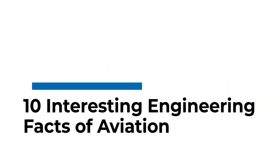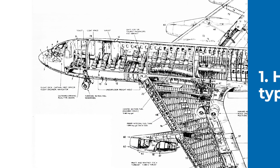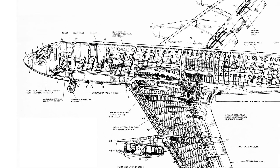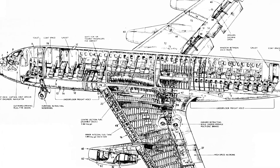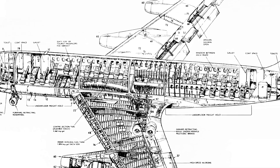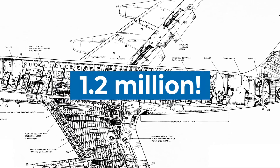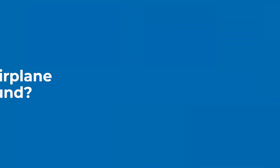In observance of National Aviation Day, we're going to take a look at 10 interesting engineering facts of aviation. So here we go. How many parts are in a typical commercial airplane? A typical single-aisle commercial airliner, such as a Boeing 737 or an Airbus 320, can use up to 1.2 million parts depending on how it's outfitted.